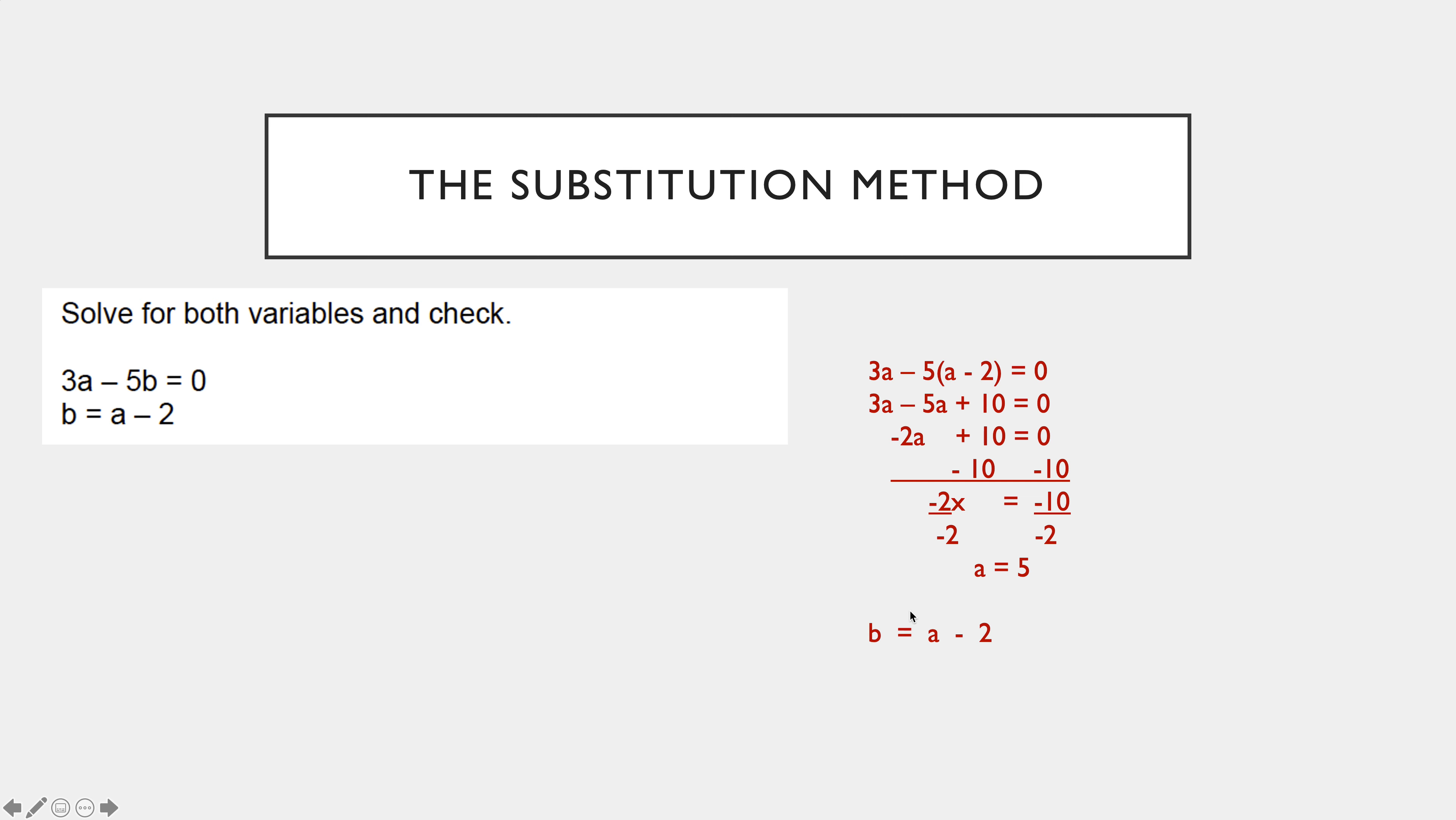To go back and get b, b is the a minus 2. B is 5 minus 2, b is 3. So there are the correct values.